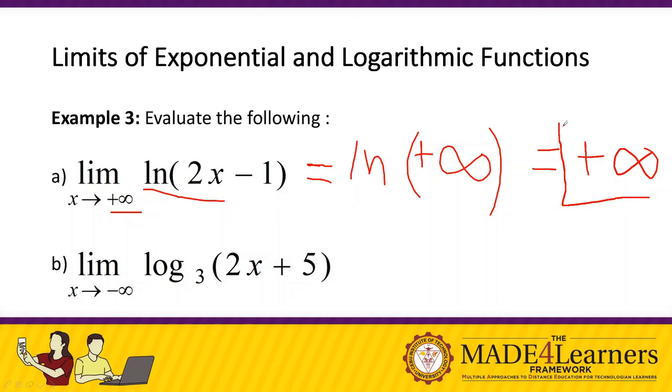Now, for letter B, let's have this. We have log, logarithm of 2x plus 5 to the base 3 as x approaches negative infinity using our substitution rule. We have 2 times negative infinity. Again, infinities are affected by signs. 2 times negative infinity is just negative infinity. So negative infinity plus 5.